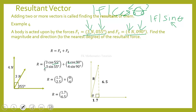We can illustrate this in a diagram: the resultant force has a y-component of 6.5 N and an x-component of 1.7 N. Using Pythagoras' theorem, the magnitude of the resultant force is √(1.7² + 6.5²) = √45.14 ≈ 6.7 Newtons.